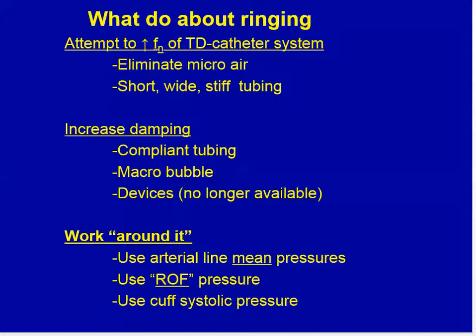So what do we do about ringing? You can attempt to improve the natural frequency of the transducer system by eliminating any micro air, shortening the tubing, and getting rid of stopcocks. You could artificially increase damping by adding a section of compliant tubing or a micro bubble. Or you can work around it by using the arterial line mean pressure, which is unaffected by ringing, by using the return of flow pressure to measure systolic pressure, or simply using the cuff to measure systolic pressure.